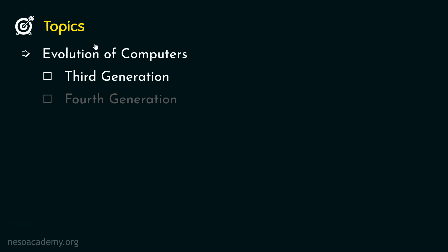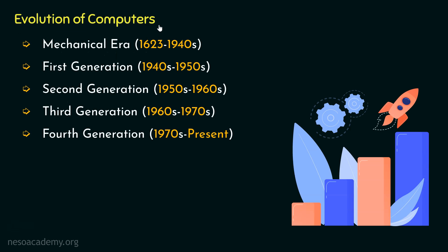Before directly diving into the third generation of computers, let's have a quick recap of the Evolution of Computers. We know in the mechanical era, which spanned from the 1600s till early 1940s, the computers were made mechanically. Then in first generation, due to the advent of electricity, the vacuum tubes became the main component. Moving forward, during the second generation, the vacuum tubes which were used in the first generation of computers got replaced due to the advent of transistors. Then comes the third generation.